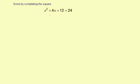Solve by completing the square. To solve by completing the square, the first thing I need to do is write this equation as a square of a binomial. Then we'll solve by using the square root method.